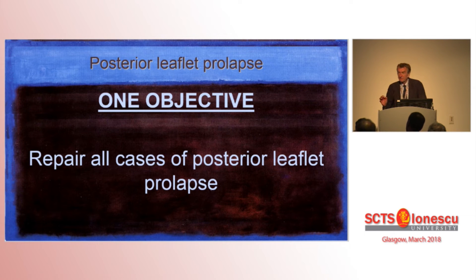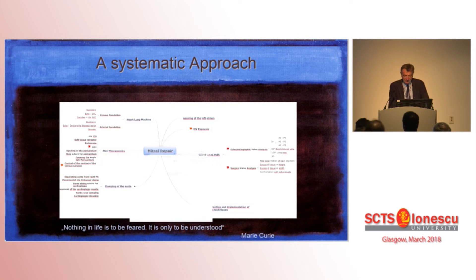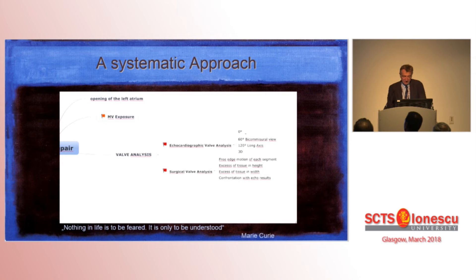We should have one goal: to repair — and it is feasible — all prolapse of the posterior leaflet due to degenerative disease. For this, you need a very systematic approach and a very clear view of what you want. Analysis by echocardiography is key, and surgical analysis is key.